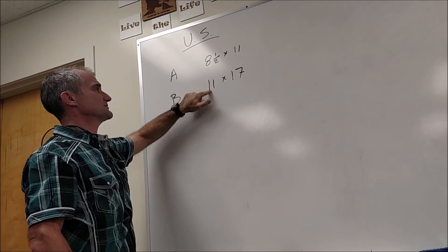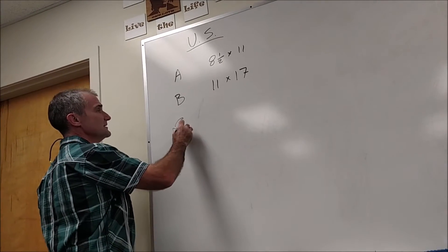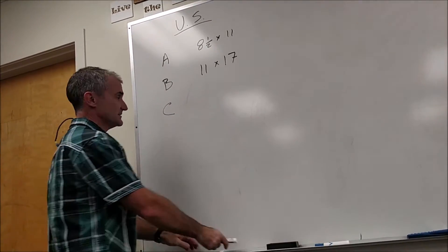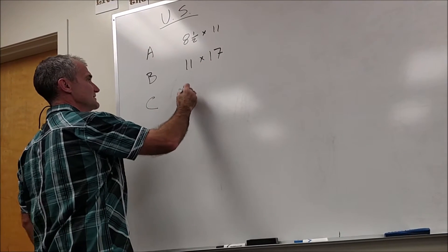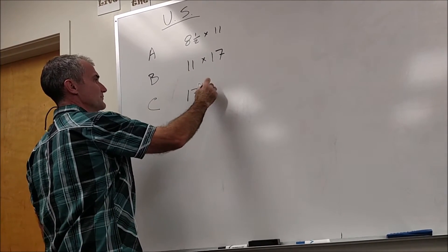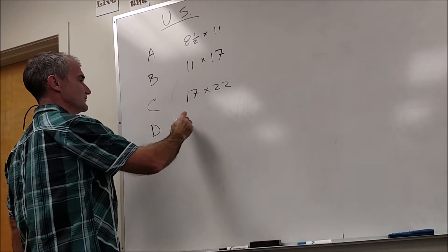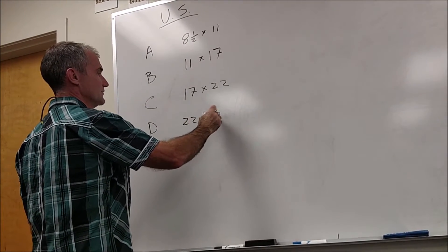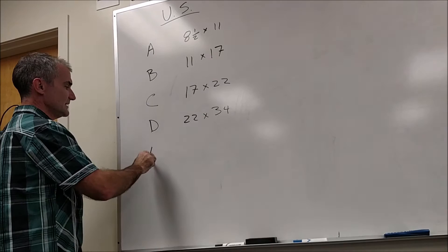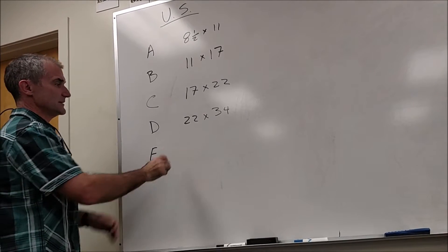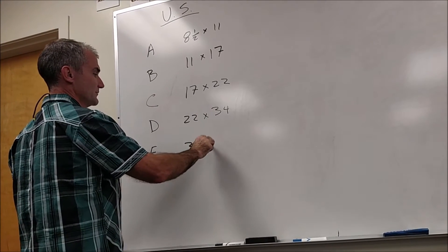So A is eight and a half by eleven, B is twice as large, C is twice as large as that. So you take the 17 and you double that by 22. D again is twice as large so it's 22 by 34, and then E is the largest paper, usually it's going to be 34 by 44.